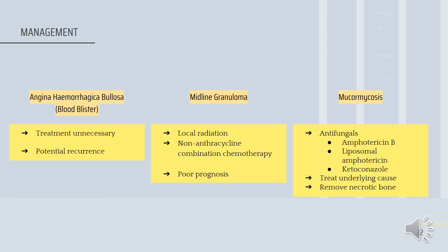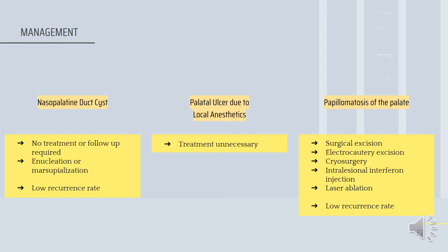For mucormycosis, antifungal treatment with high-dose Amphotericin B remains the most generally effective drug for most systemic mycoses. Liposomal Amphotericin is less toxic and equally effective. Ketoconazole and its analogs have mainly been used for maintenance. There should also be treatment of the underlying cause if possible, and removal of necrotic bone. For nasopalatine duct cyst, no treatment or follow-up is required in asymptomatic cases; however, in symptomatic cases, enucleation or marsupialization is indicated, with a low recurrence rate.